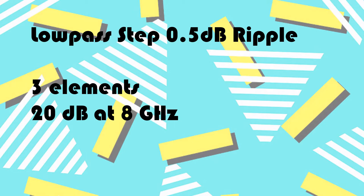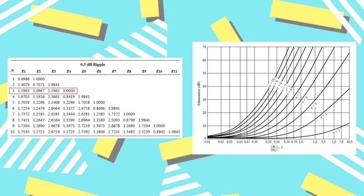The first filter designed was a low-pass filter fabricated with stepped impedance microstrip lines. Our filter, comprised of three elements, had an attenuation of 20 dB at 8 GHz and a cutoff frequency at 4 GHz. To design the filter, Pozar's figure 8.27a, shown on the right, was used to determine the number of elements needed. Table 8.4, shown on the left, was used to determine the G values needed to design the filter.